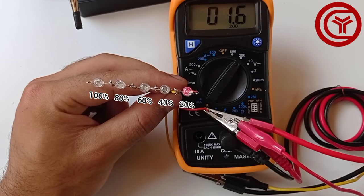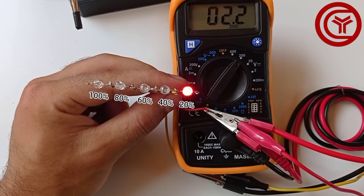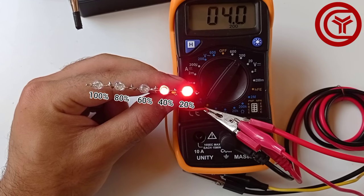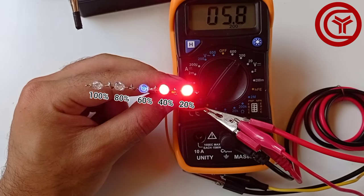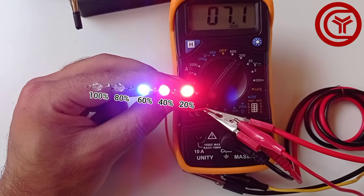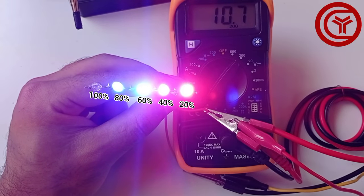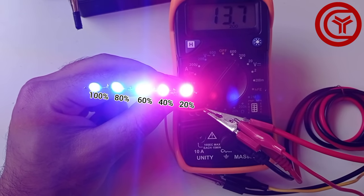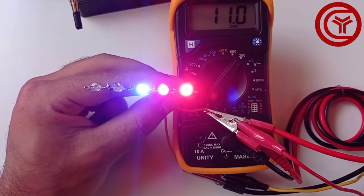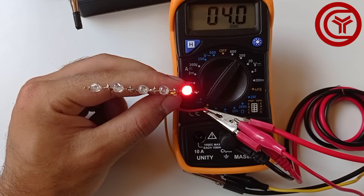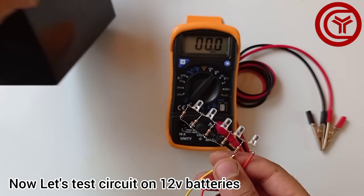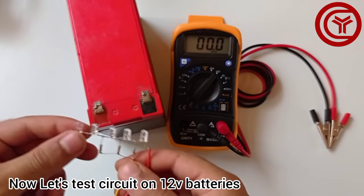Also I will connect variable DC supply to check functioning of circuit. You can see I am increasing voltage slowly and LEDs have started glowing. You can see last LED glows at about 13 to 14 volts, that will indicate battery is 100% charged. Now let's test on 12 volt batteries.